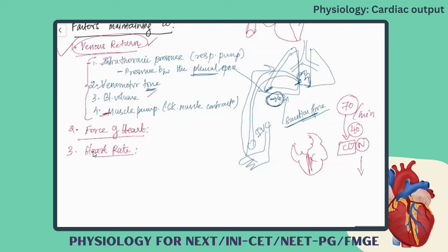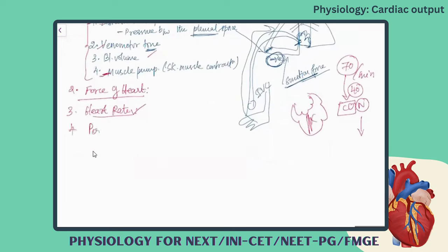That is how the heart rate plays a role in maintaining the cardiac output. The last factor is peripheral resistance — the resistance which is maintained in the blood vessels. Peripheral resistance is very important in maintaining blood pressure, and it has a reflection in cardiac output. If peripheral resistance increases, blood pressure increases, which also affects cardiac output.